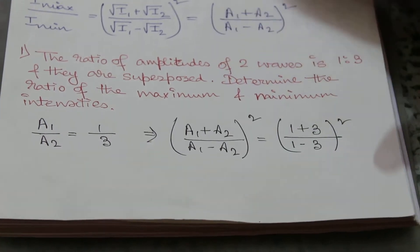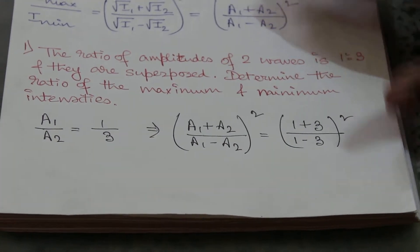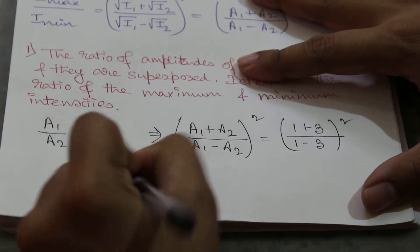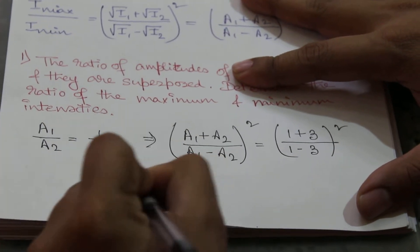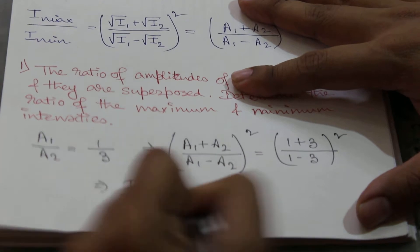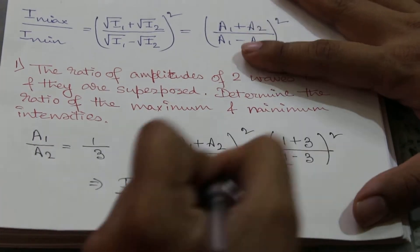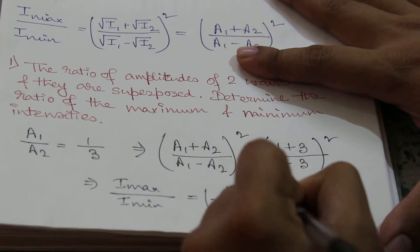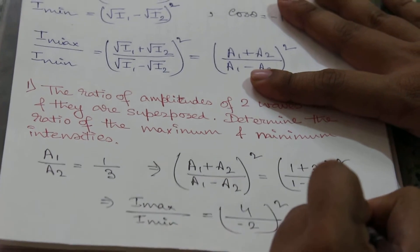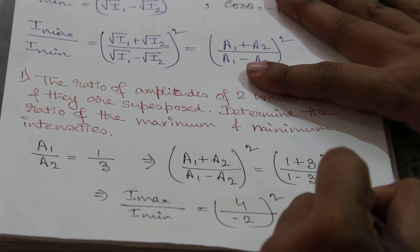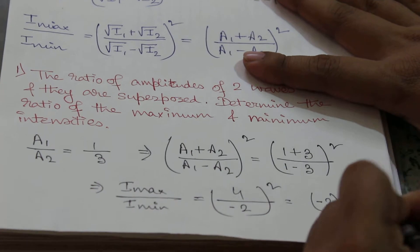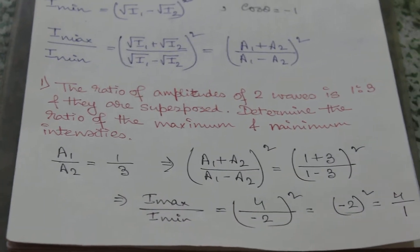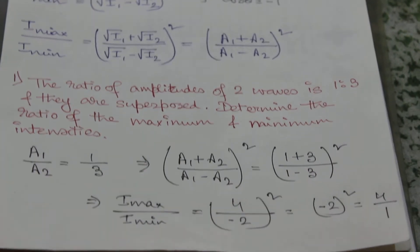Squaring both sides gives I_max / I_min = (4 / −2)² = (−2)² = 4/1. So the ratio of maximum to minimum intensity is 4:1.